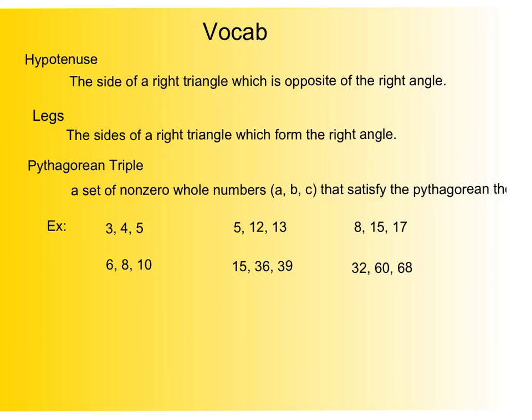So let's begin with vocabulary. First of all, we have this thing called the hypotenuse, which is the side of the right triangle opposite of the right angle. So if I draw a right triangle for you, and we've got our 90 degree box there, then this side here is the hypotenuse because it's opposite of that right angle. These other two sides are called legs, the sides of the right triangle which form the right angle. You can see they form that right angle box. The side opposite is the hypotenuse.